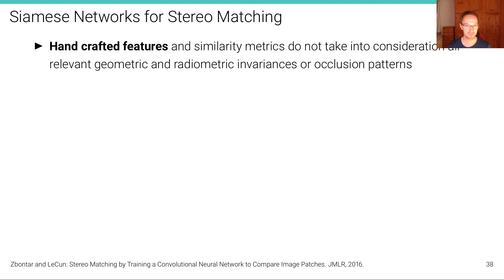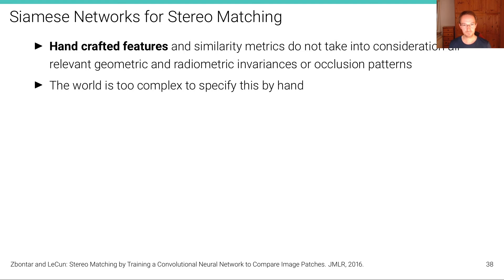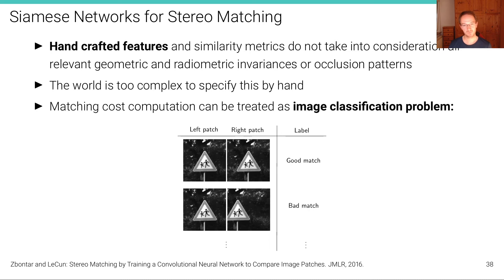We want to exploit the same principle here, but still staying within the block matching regime. We're using a similar algorithm for matching; we just want a better similarity metric. The world is too complex to specify this by hand — that's why we need learning. The key observation, made in a seminal paper by Zbontar and LeCun, is that the matching cost computation can actually be treated as an image classification problem.